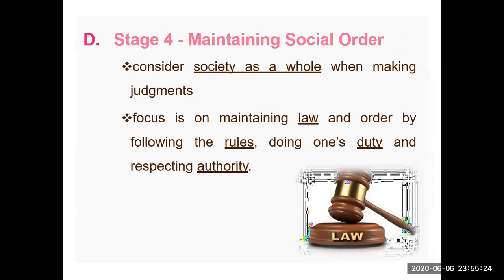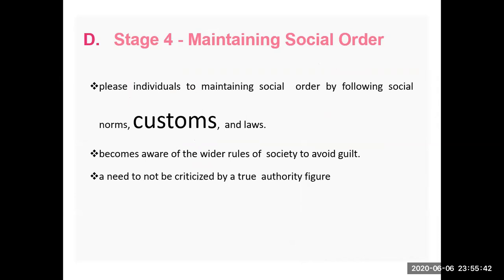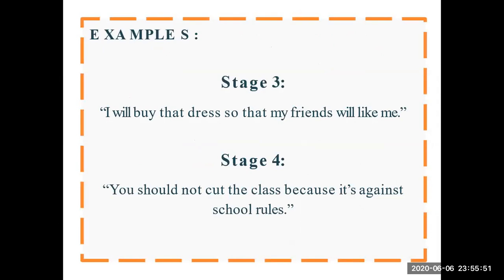Stage 4 is maintaining social order. At this stage, people consider society as a whole when making judgments. They focus on social laws, rules, one's duty, and respecting authority. They follow the social order and avoid things that make them feel guilty. For example, in stage 3 the thinking would be: 'I will buy that dress so that my friends like me.' In stage 4, the thinking is about maintaining law and authority: 'You should not cut class because it is against school rules.' You must be present in class to maintain the rules.